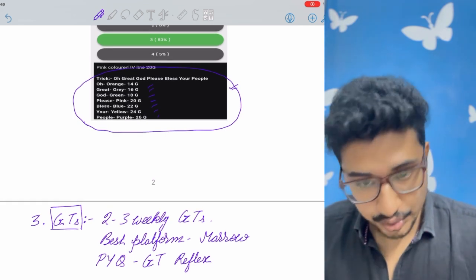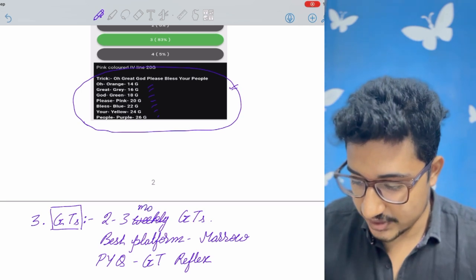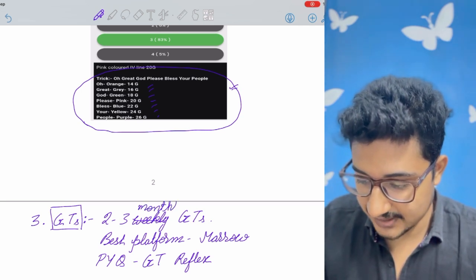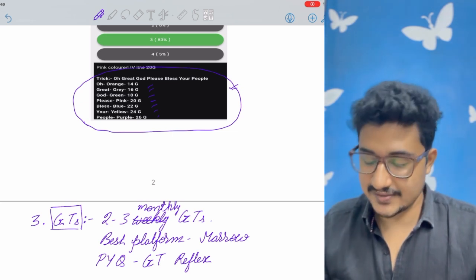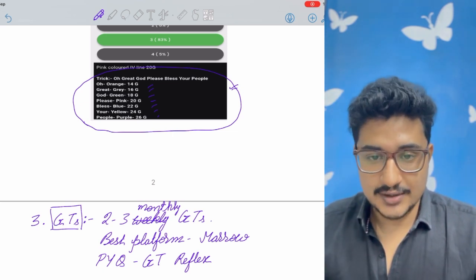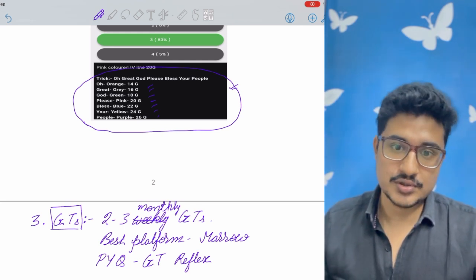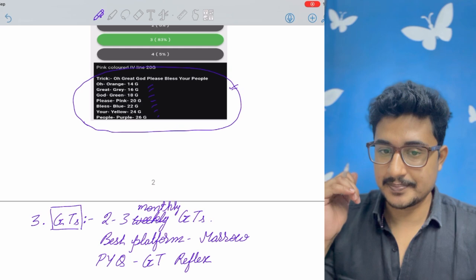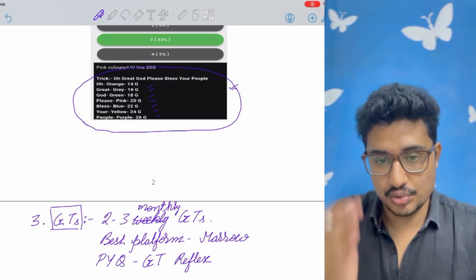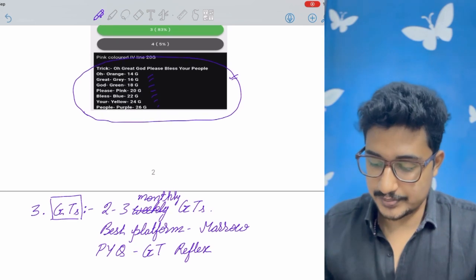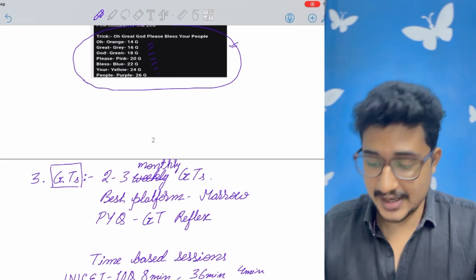The third point that you should do is GT. You have to give a GT and not two to three weekly. It would be two to three monthly. At the frequency, Marrow gives the GT, you should give the GTs. And one or two GT, you should also give Marrow's outside. Because what happens? Marrow is biased. Because all the images that Marrow uses in question bank and the images they give in the GTs, those only are repeated in their GTs more and more. So if you practice from another platform, it would be helpful to eliminate the Marrow bias.